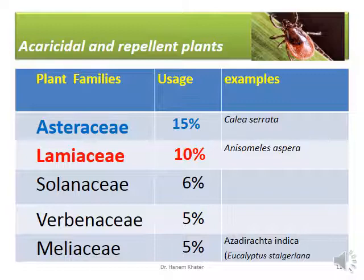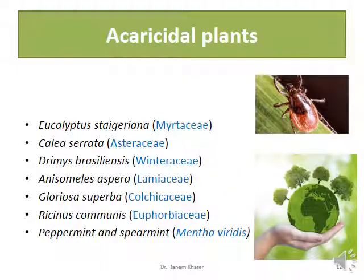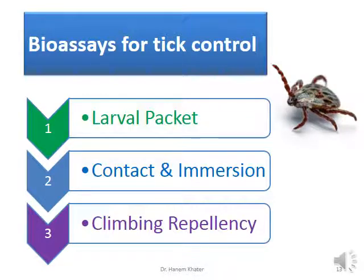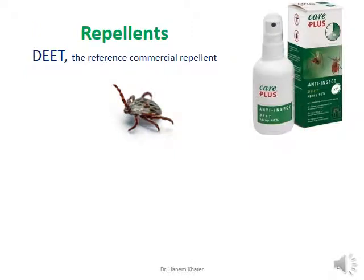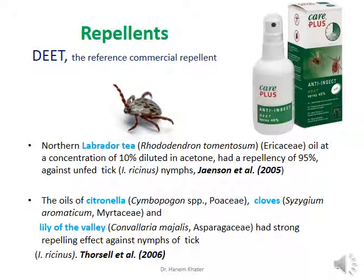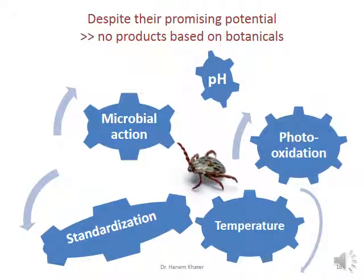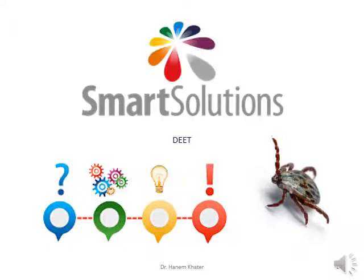Acaricidal and repellent plants are mainly found in two major plant families: Asteraceae and Lamiaceae. Here are some examples of acaricidal plants. There are three major bioassays used for tick control. Here are some examples of oils and active compounds. DEET is the reference commercial repellent, but some plants are more effective than DEET. Despite their promising potential, there are no products based on botanicals because of pH, photo-oxidation, temperature, standardization, and microbial action. So we are looking for smart solutions.